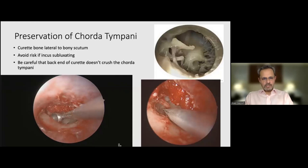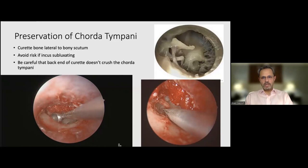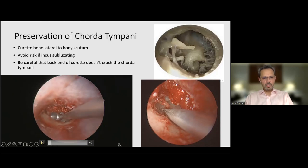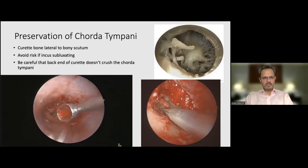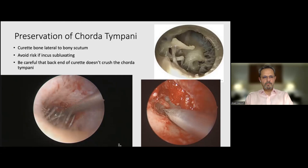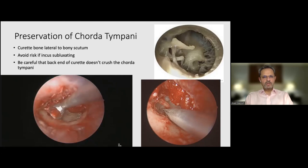I would then curette the posterior wall of the auditory canal to gain access to the footplate. This is not done on every occasion — only if needed, because the endoscope provides the extra benefit of proceeding without curettage. Remember that the chorda tympani travels from the facial nerve in the posterior wall of the auditory canal, under the pars flaccida, and goes behind the neck of the malleus. When curating the posterior canal wall, be careful at the top not to subluxate the incus, and posteriorly ensure the belly of the curette does not crush the chorda.